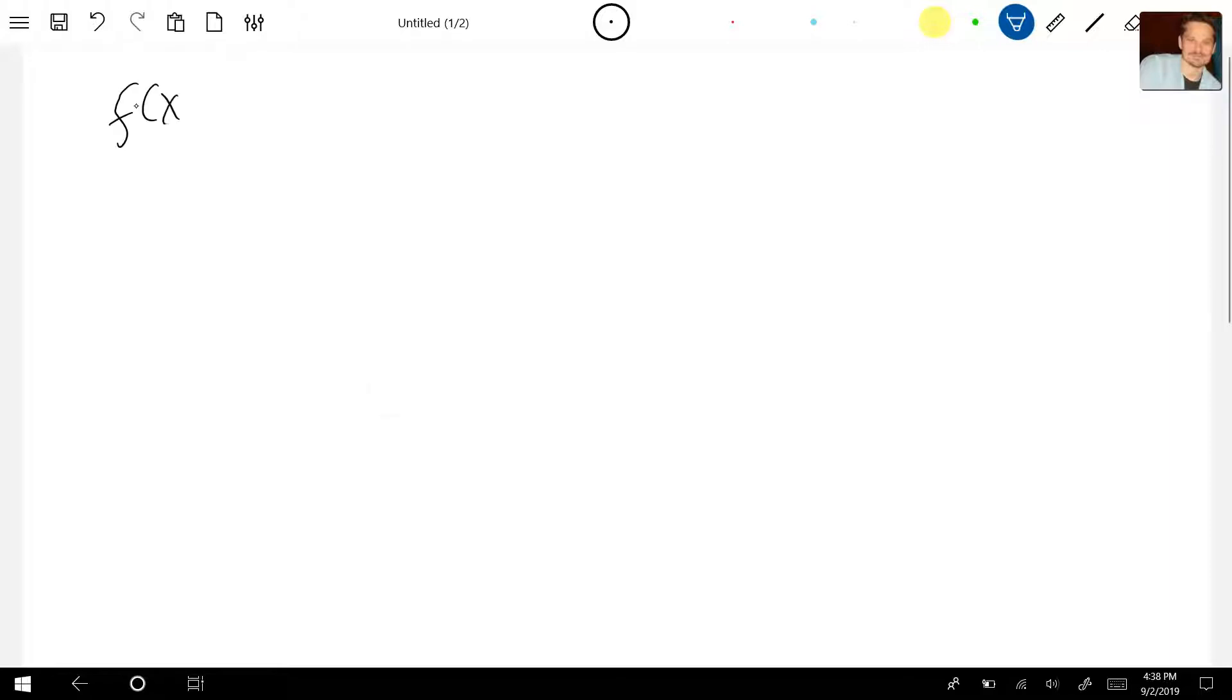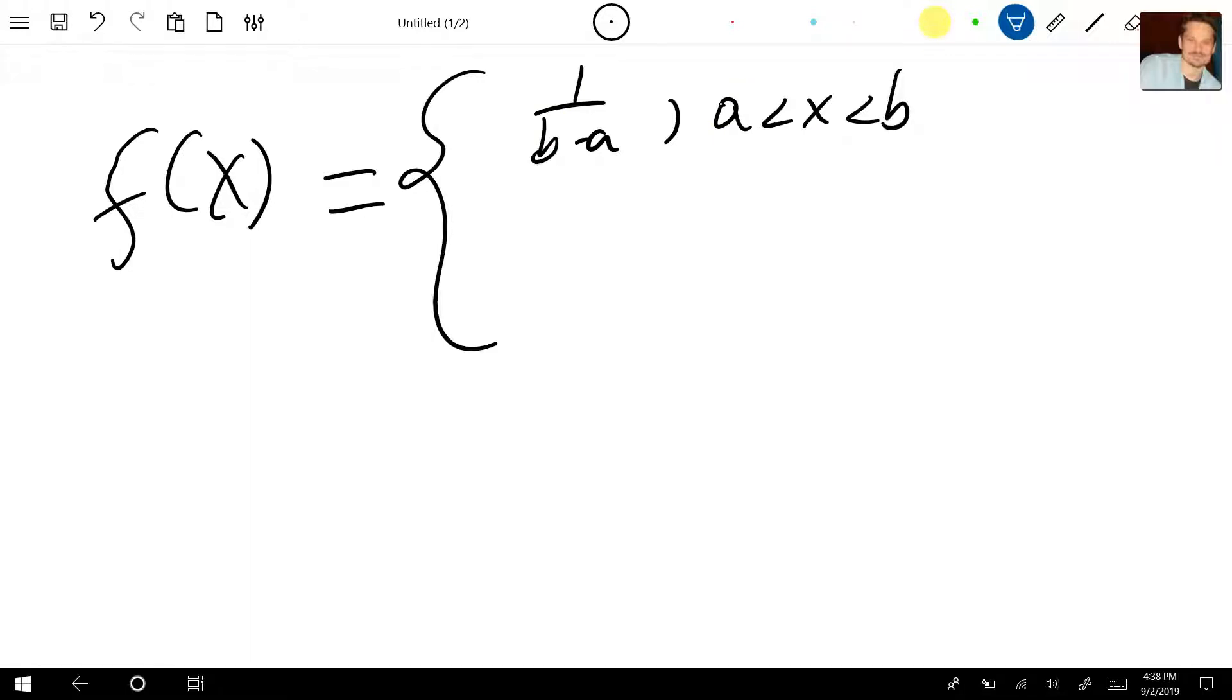So here's our function. I'm going to have f of x equals, and it's a piecewise defined function, so it's got an upper piece and a lower piece. The upper piece is 1 over b minus a, and this is defined when a is less than x which is less than b. And then the piece on the bottom is defined as the value zero, and here you put ow like that, which is short for otherwise.